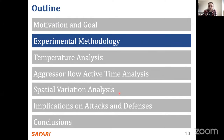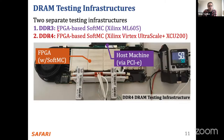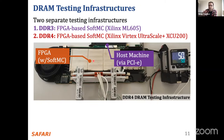Here is our experimental methodology. We have two different setups: one for DDR3 chips and another for DDR4 chips. This is a picture of the DDR4 chip setup, which has an FPGA board programmed with SoftMC — a highly modified version of SoftMC, now known as RAMbender. The FPGA board is connected to the host machine via a PCIe connection. The host machine prepares the test code, sends it to the FPGA, and the FPGA issues commands to the DRAM module.